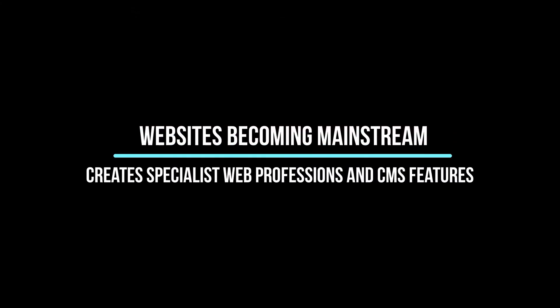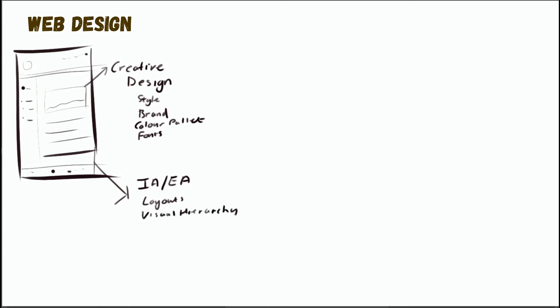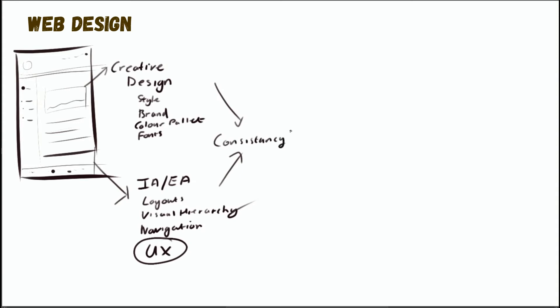As online grew popular and became mainstream, websites became more important to businesses. Businesses had to have an online presence that represented their brand. This meant that specialist professions started to develop, particularly those in the creative industry. The web designer was replaced by specialists in each area of web design. Creative designers focused on how to translate a brand's identity online, focusing on the style, how the brand would be represented, things like colors, imagery and fonts. Whereas information architects or experience architects would focus on things like visual layout, visual hierarchies, navigation, page structure, and where information should be placed — really just the whole overall UX of the system. The one thing that's paramount for all of these concepts is consistency, which is incredibly difficult to achieve without a CMS.